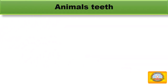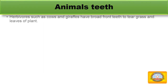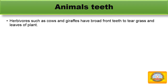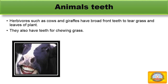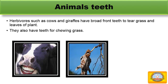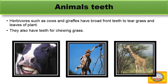Herbivores such as cows and giraffes have broad front teeth to tear grass and the leaves of plants. They also have flat teeth for chewing grass.